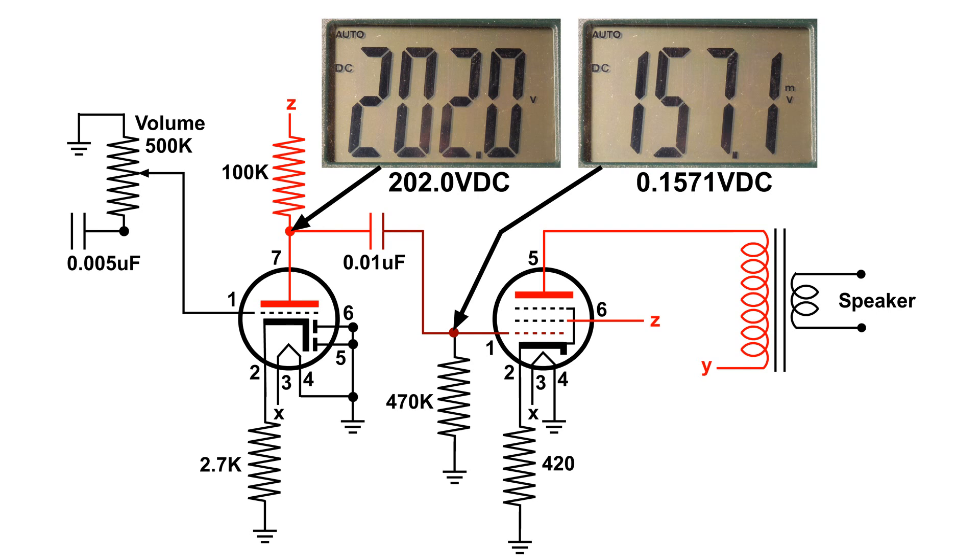Here I have put the audio coupling capacitor back in. And you can see that the left plate of the capacitor has 202 volts on it. Where the plate on the right of the capacitor only has .1571 volts on it. That's one of the characteristics of a capacitor. It will block DC.